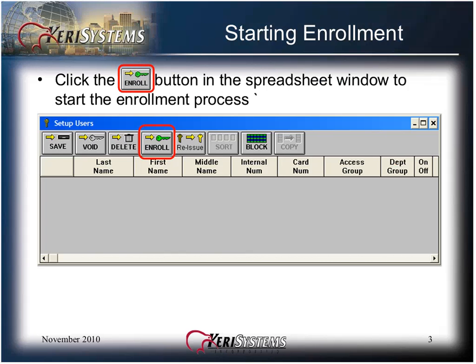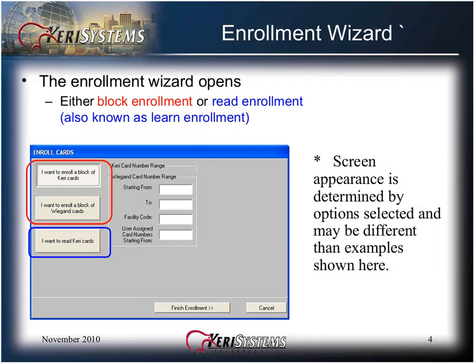Click the Enroll button in the spreadsheet window to start the enrollment process. When first deploying your system, the Setup Users spreadsheet will be blank. The Enrollment Wizard opens and offers either Block Enrollment or Read Enrollment, also known as Learn Enrollment. The Enrollment Wizard will guide you through enrolling credentials. There are two types of enrollment: Block Enrollment and Read Enrollment. Read Enrollment is also referred to as Learn Enrollment.